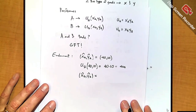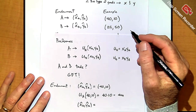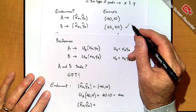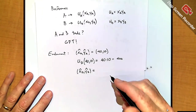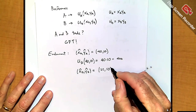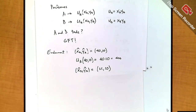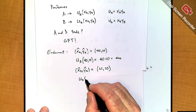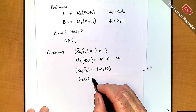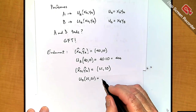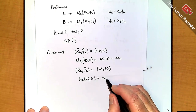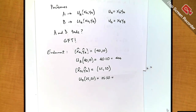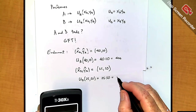So for my benchmark I can take the utility that A gets if they just consume the endowment they're given. With 40 units of X and 10 units of Y, and utility function X times Y, that's 400 — that's A's utility at the endowment. You do the same thing for B. B had 25 and 50, so 25 times 50 is 1250 — that's B's benchmark.